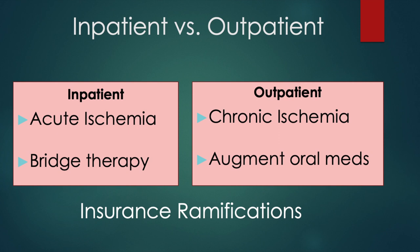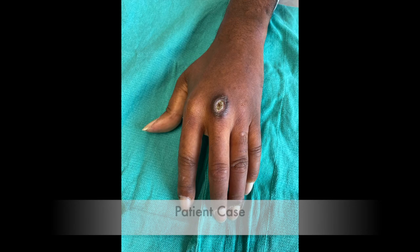Outpatient treatment addresses chronic disease, offering adjunctive treatment alongside oral medication in the hope of ameliorating vasospasm and avoiding the morbidity of surgical sympathectomy. Outpatient insurance authorization is often a lengthy process, which must be taken into consideration in patients with impending tissue loss.